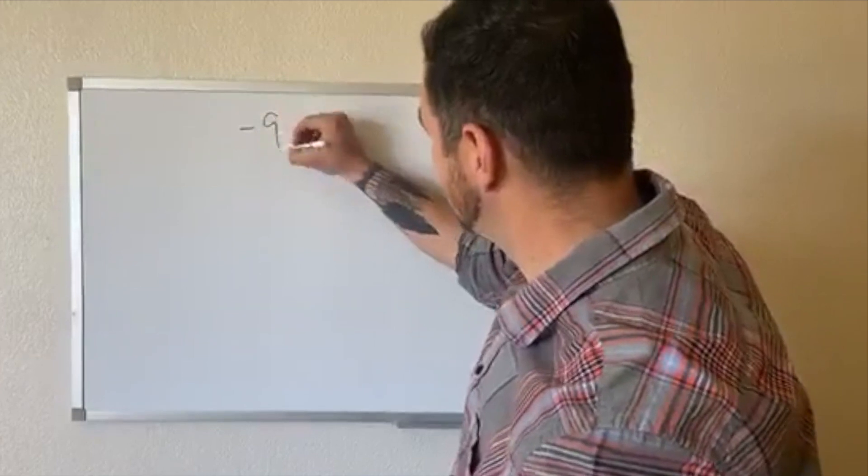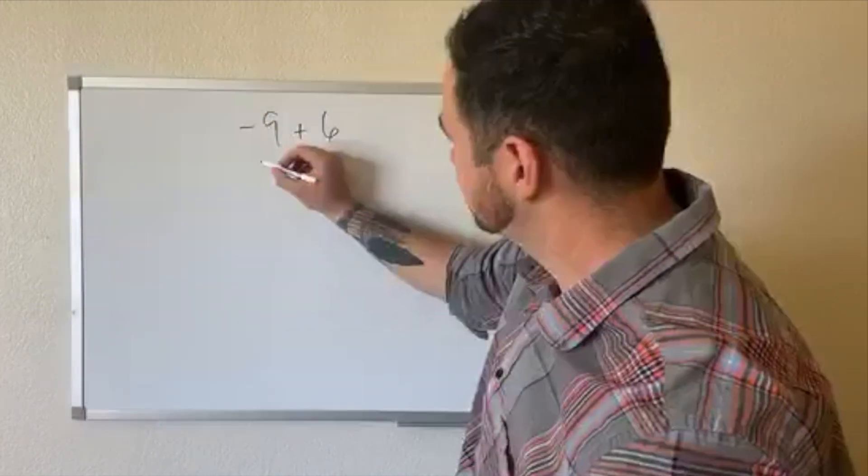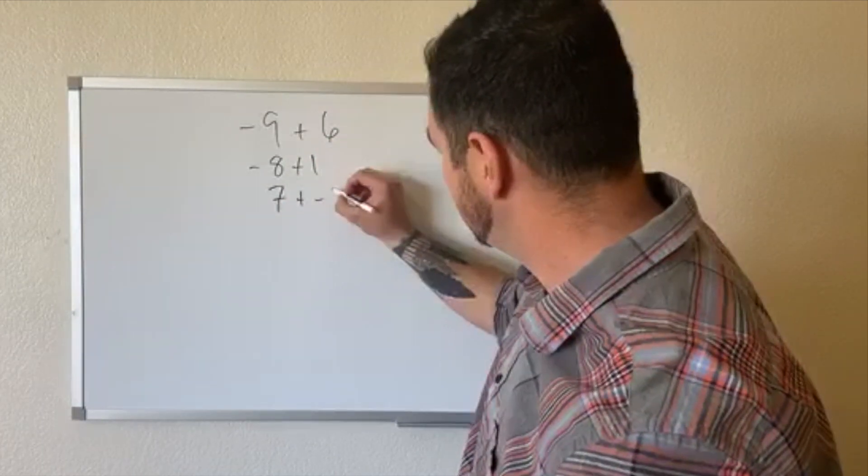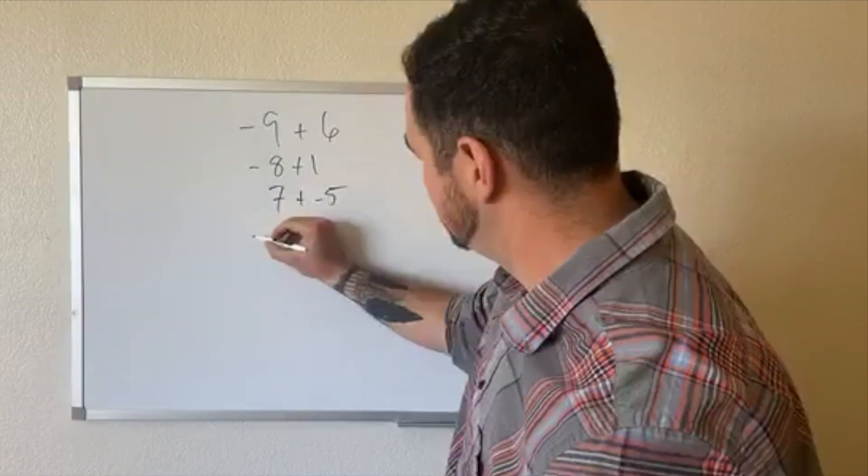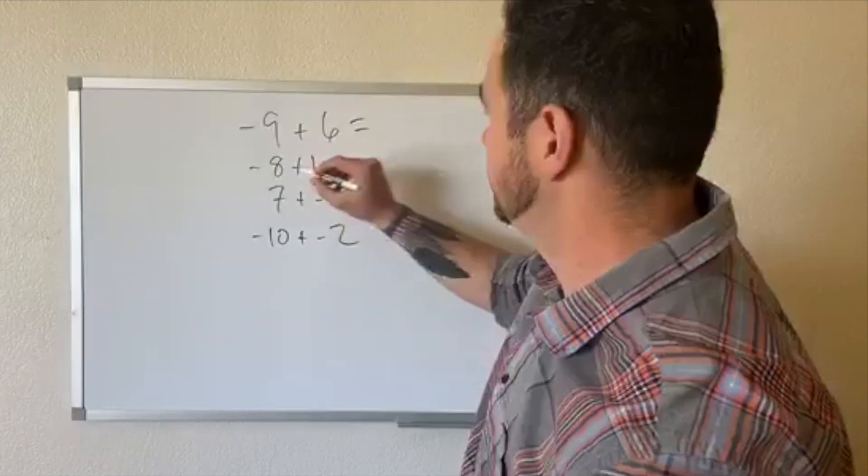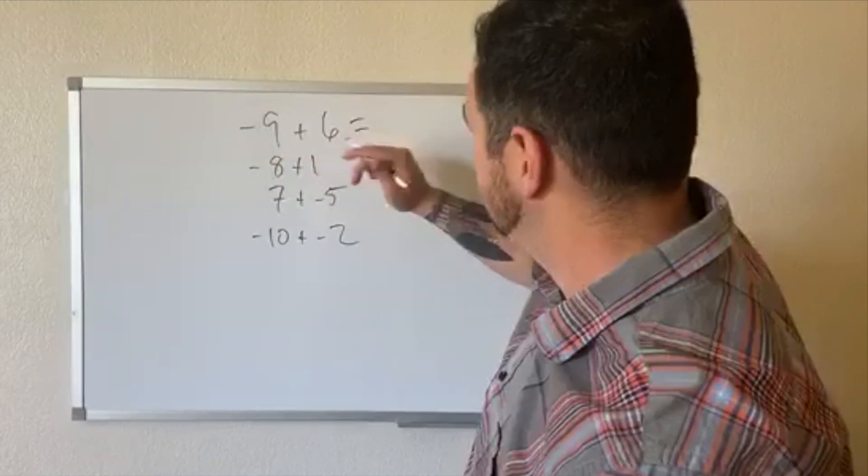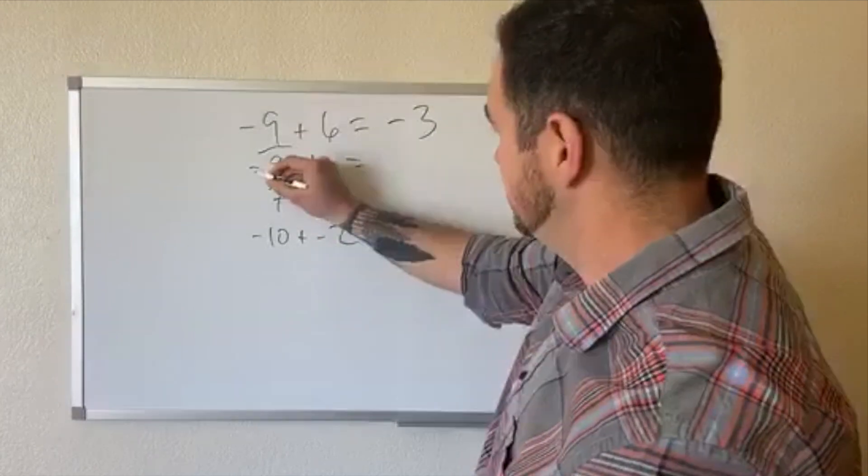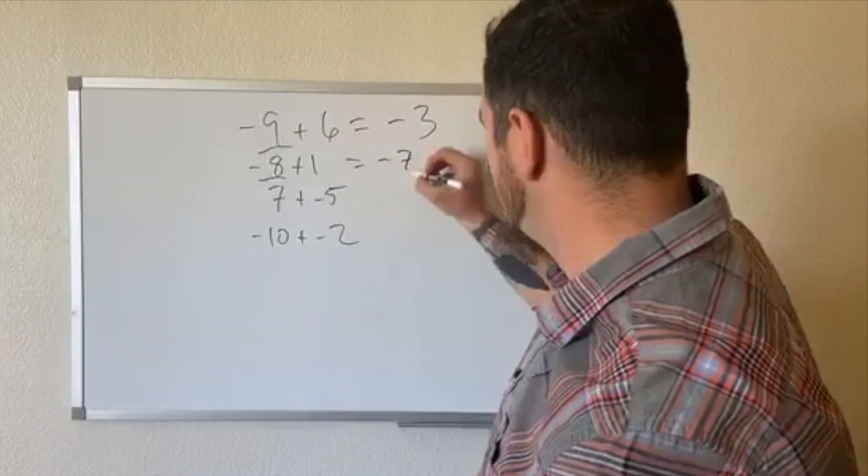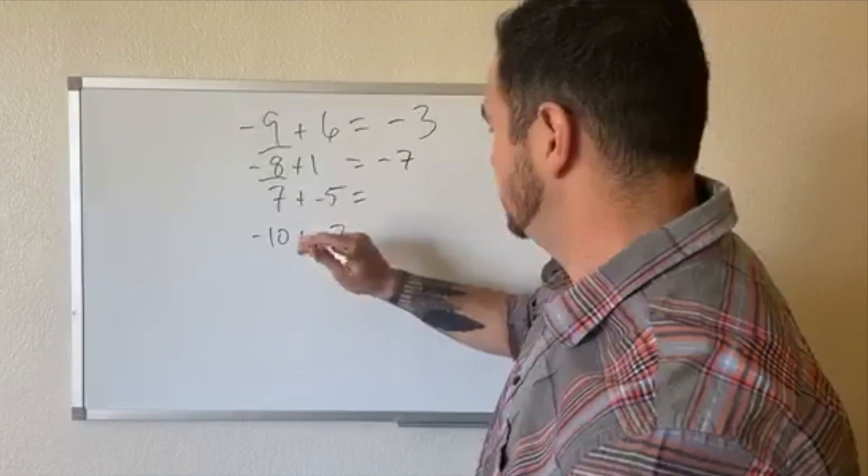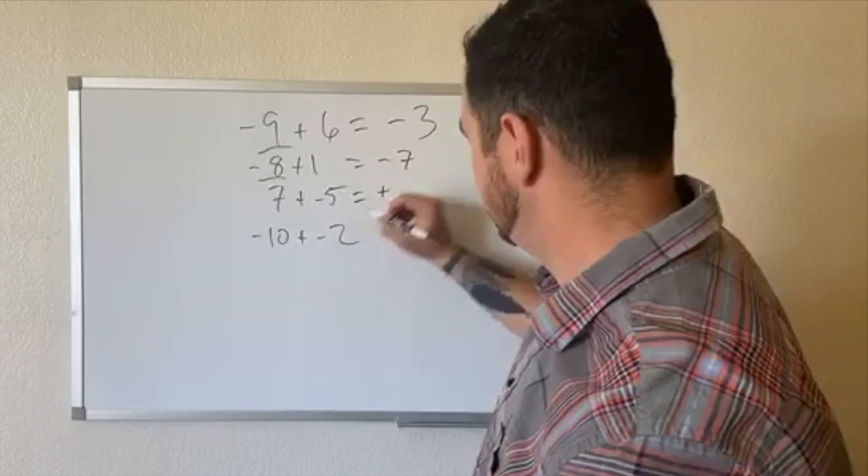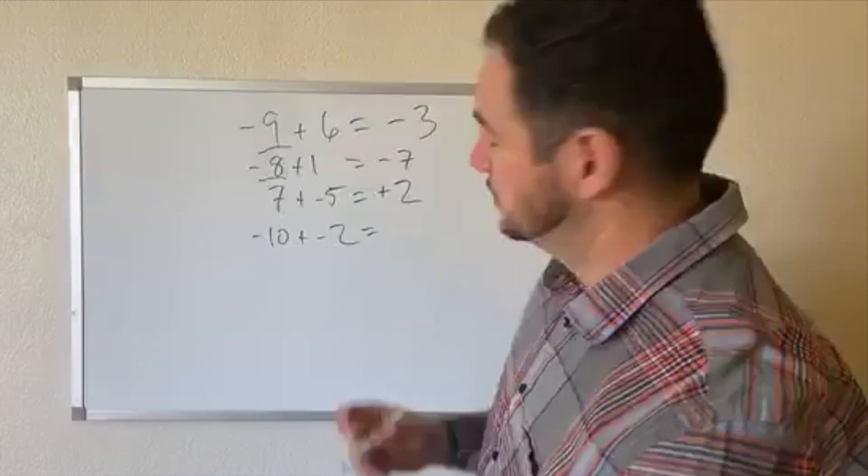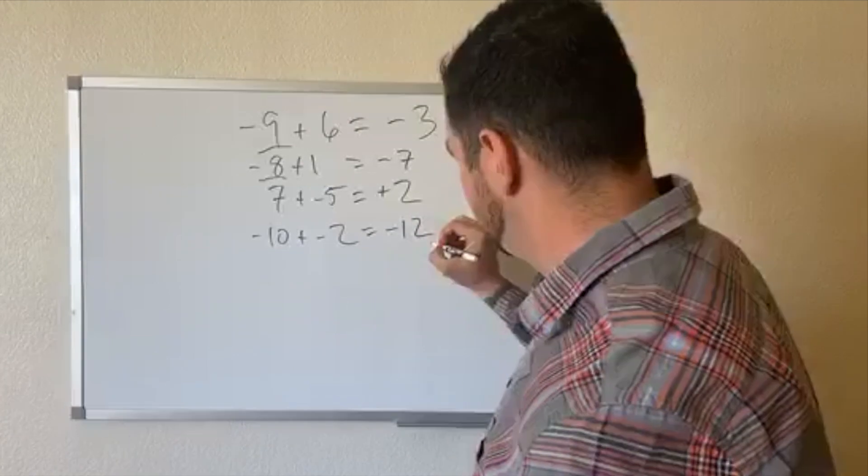And remember we're doing only addition. So we have negative nine plus six. We have negative eight plus one. Negative seven plus negative five. Positive seven plus negative five. And negative 10 plus negative two. Negative nine plus positive six. These two don't get along. Which one wins? The negative does. So it's going to be a negative three. These two, again, eight and one don't get along. The negative wins because it's the larger number. Negative seven. Seven and negative five. These two don't get along. So which one wins? The seven. So it's going to be a positive two. Negative 10, negative two. These two do get along. So we're going to get negative 12.